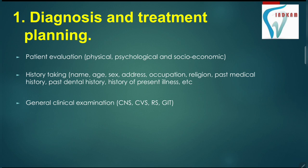The first step in making a complete denture is diagnosis and treatment planning. We have to diagnose the patient and plan our treatment accordingly. In this, we do patient evaluation — physical, psychological, and socioeconomic. We have to consider all these three points whenever we are planning any treatment for any patient.